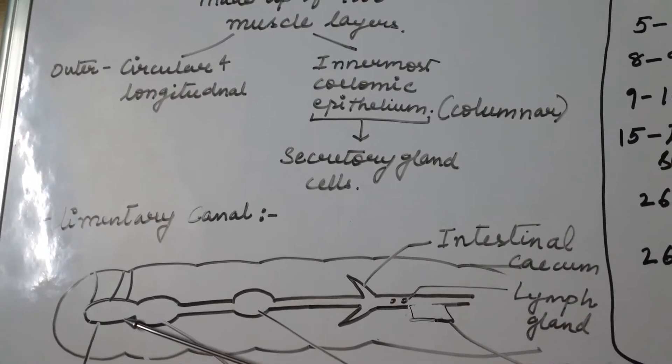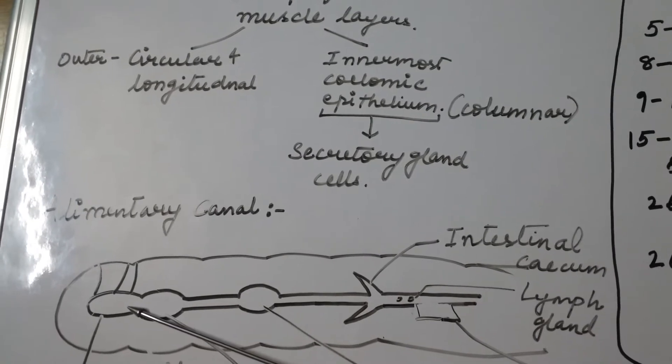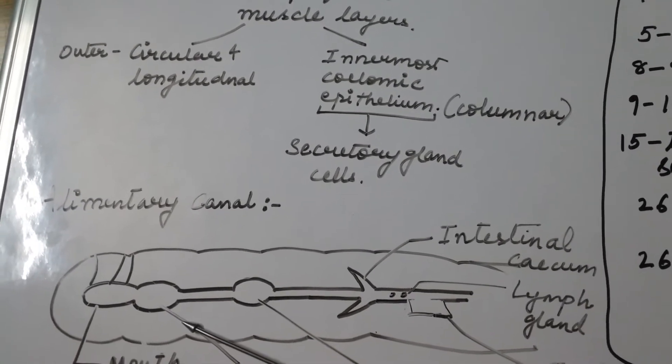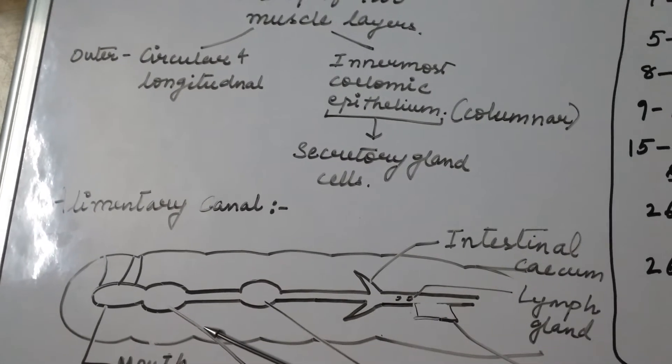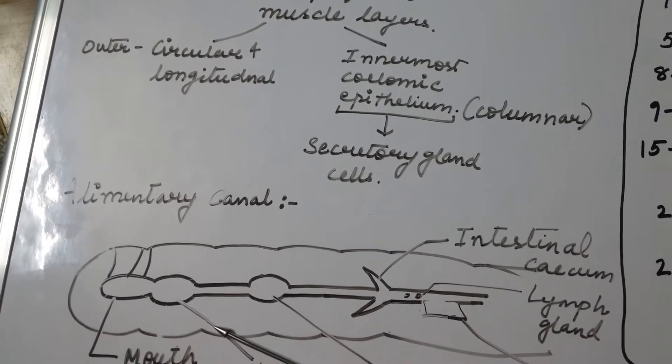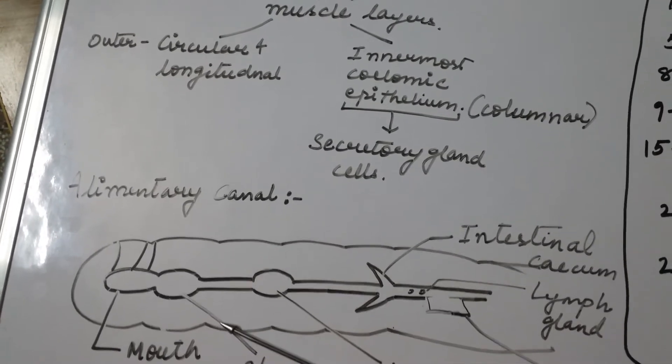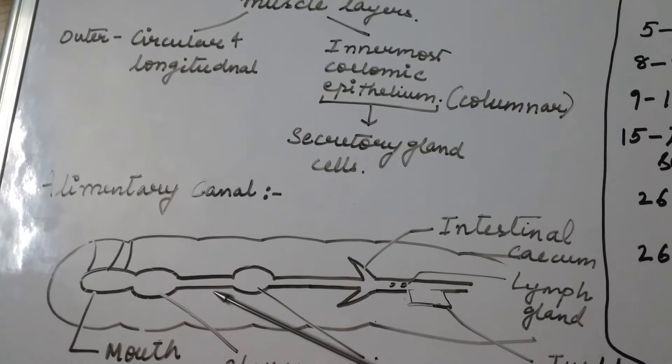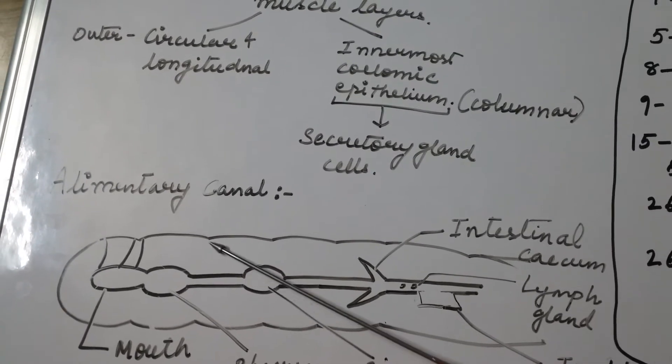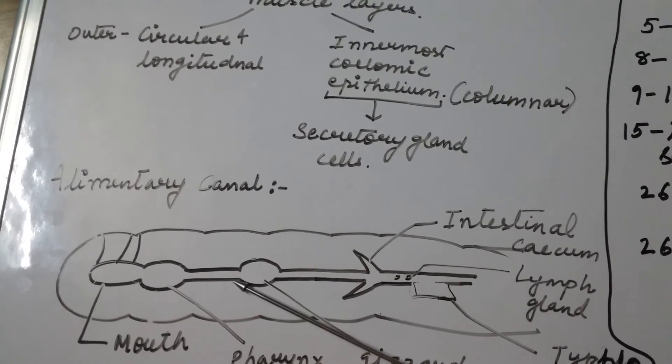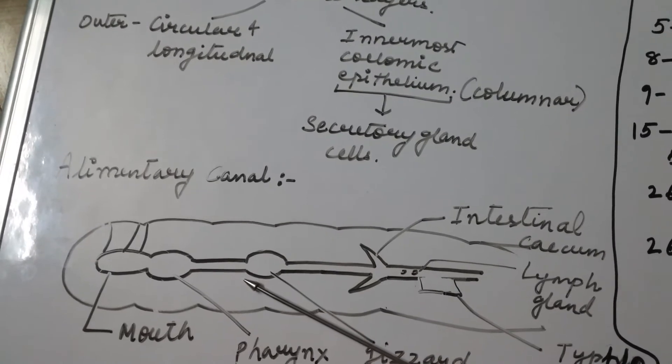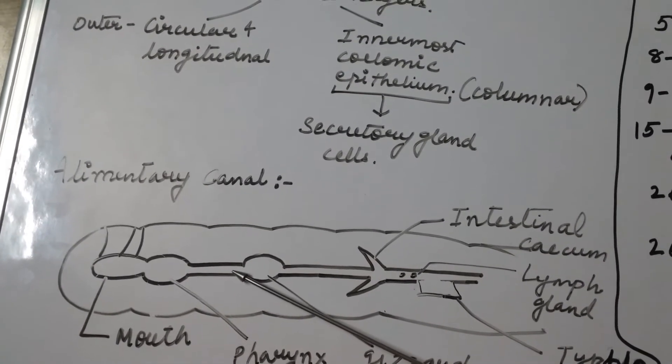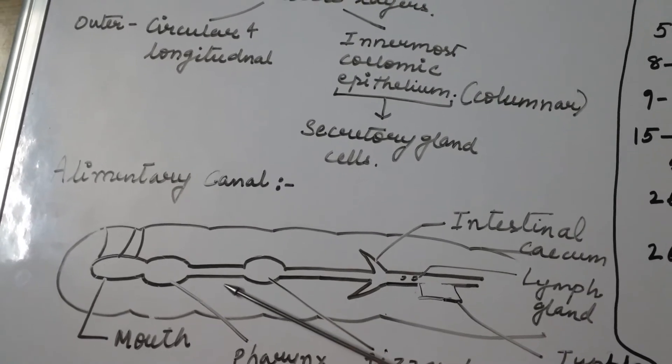After that, the buccal cavity leads to muscular pharynx and comprises of small narrow tube-like structure called esophagus and comprises of fifth to seventh segment of the body of earthworm.